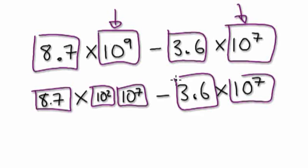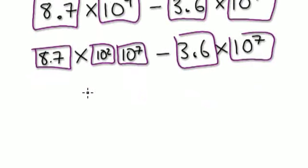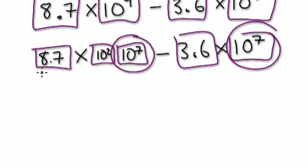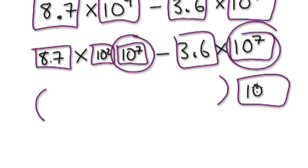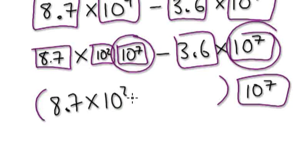So here, you've got this — so basically, look what's in common here. This is in common, this is in common, so you can actually factorize it. So it would be like this: 10 to the power of 7 here, and this would be 8.7 times 10 squared, take away 3.6.